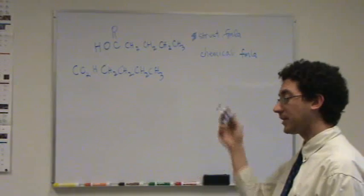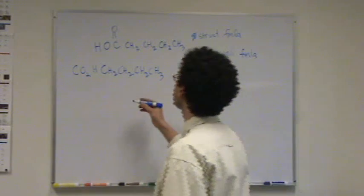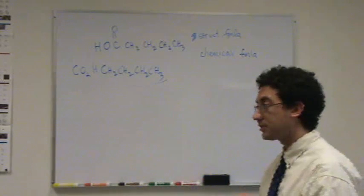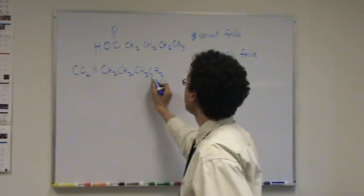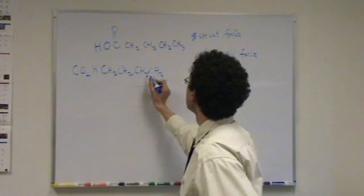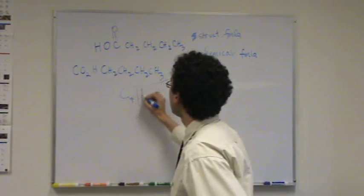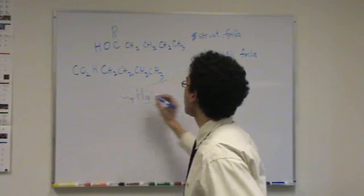You could simplify even more. So I'd accept that. I'd accept a bigger simplification, so you could simplify all those to be C4, H9, and then that stuff.